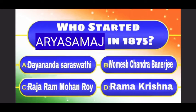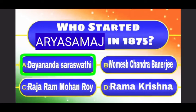Who started the Arya Samaj in 1875? And the answer is Dayananda Saraswati.